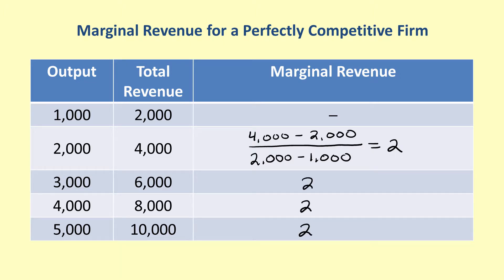Note that marginal revenue is equal to the slope of the total revenue curve. Also, in the case of a perfectly competitive firm, the marginal revenue curve is a horizontal line because it is equal to the price of the good.